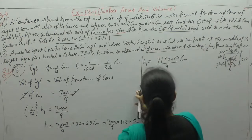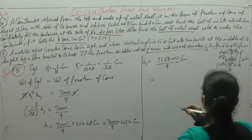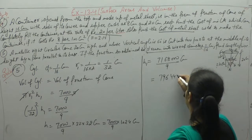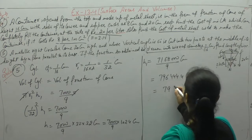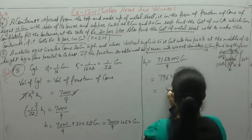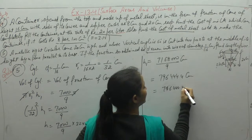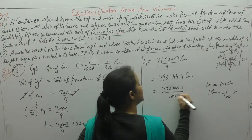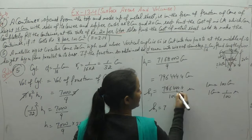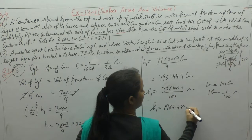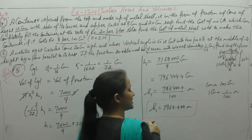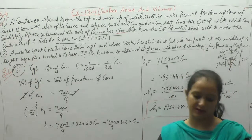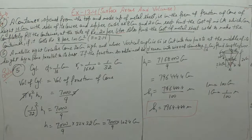Dividing 7168000 by 9 gives height = 796444.4 cm. Converting to meters: divide by 100, giving approximately 7964.44 meters, which is approximately 7962.5 meters (or about 796 km as noted).